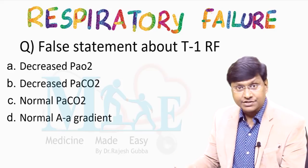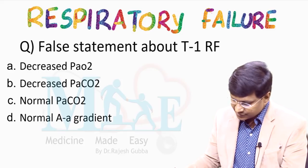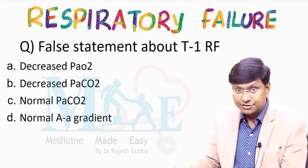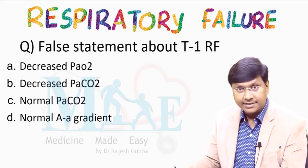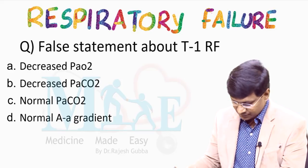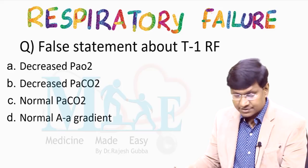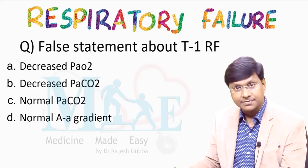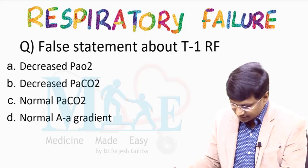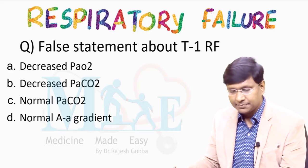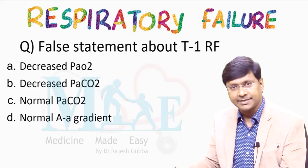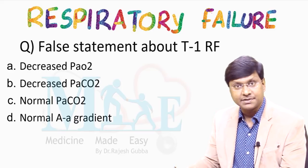The question is: the false statement about Type 1 respiratory failure is — options are: decreased partial pressure of oxygen, decreased partial pressure of carbon dioxide, normal partial pressure of carbon dioxide, and normal AA gradient. I will discuss Type 1 respiratory failure in detail and then return to this question.